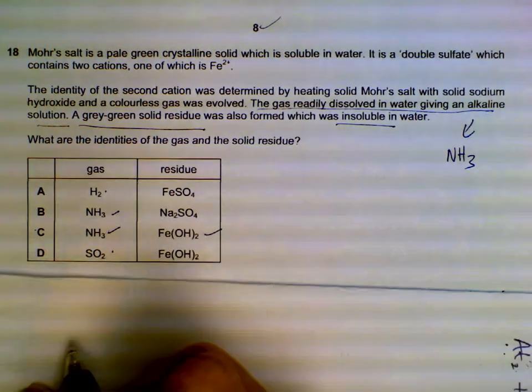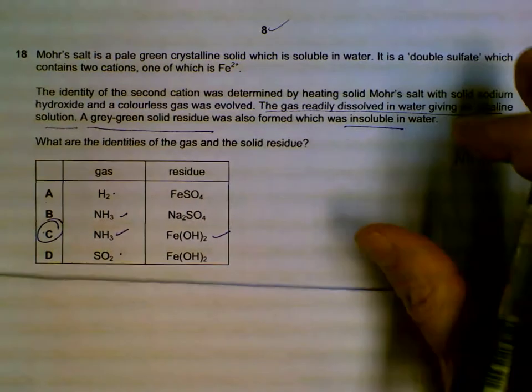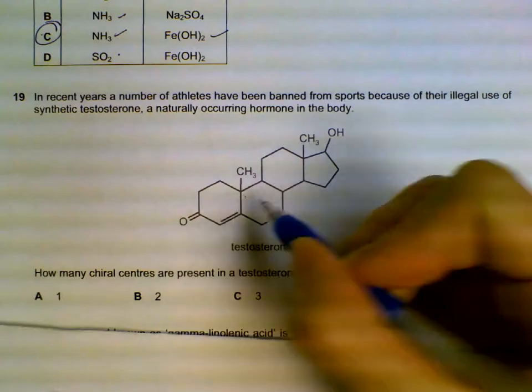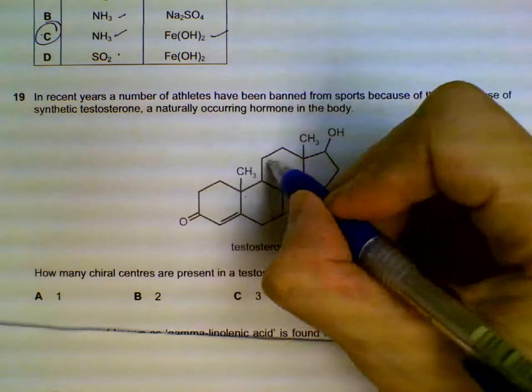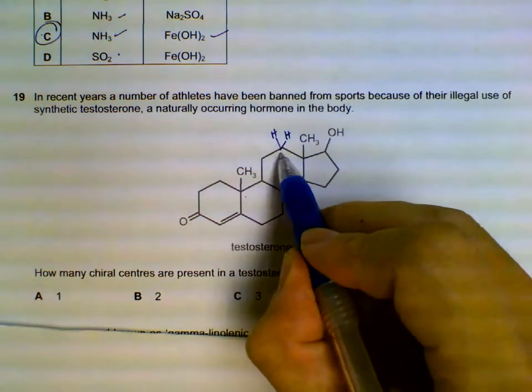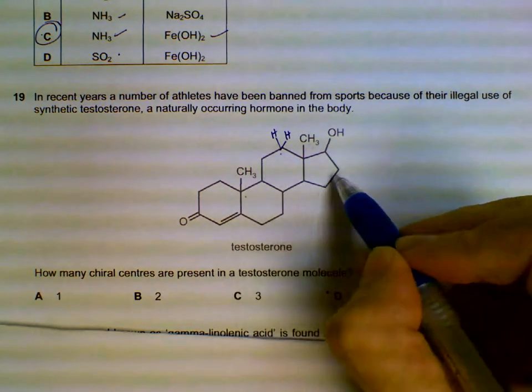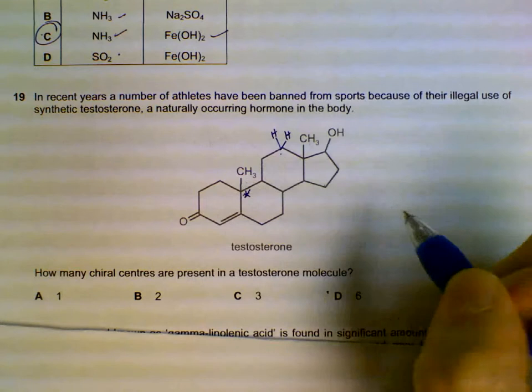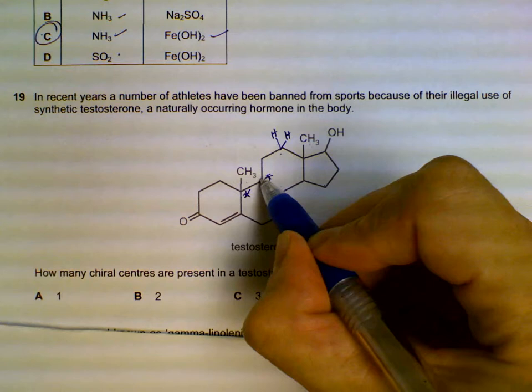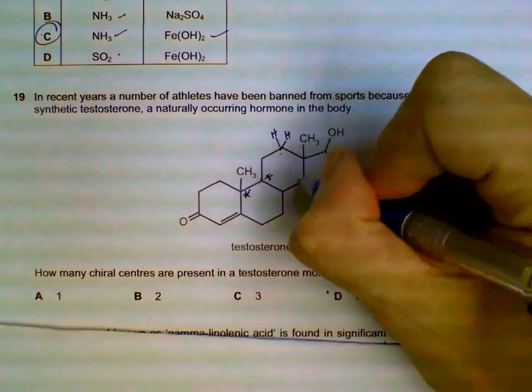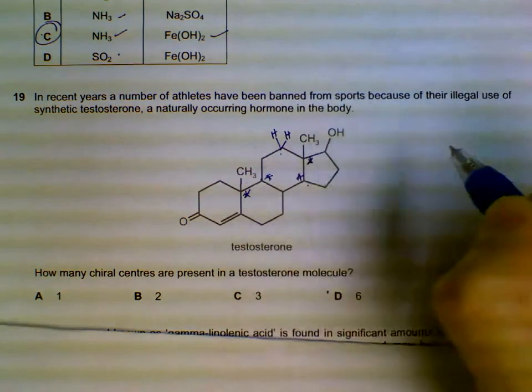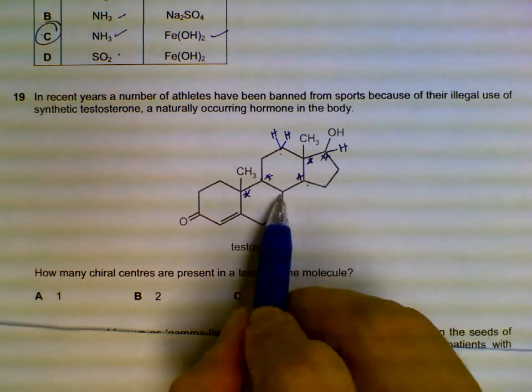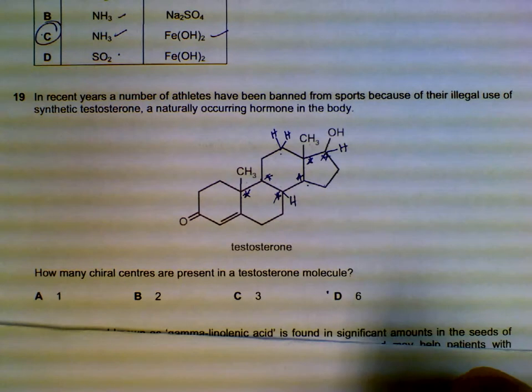Finding the number of chiral centers within the testosterone ring, we focus on carbons joined to four different groups. The hydrogens are not drawn in, but at these junctions there are two hydrogens bonded to the carbon. We look for carbons with four different groups: this carbon has four different groups, this carbon at the Y-junction has three groups plus one undrawn hydrogen - that's four groups. Counting all chiral carbons: one, two, three, four, five, six - total of six chiral carbons.